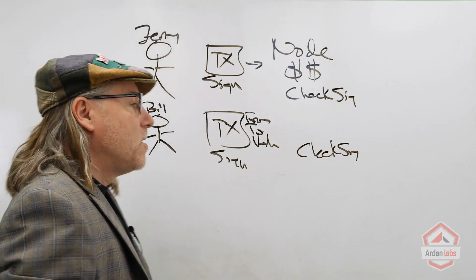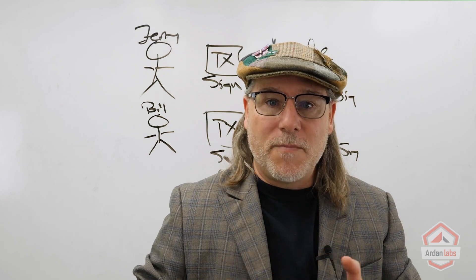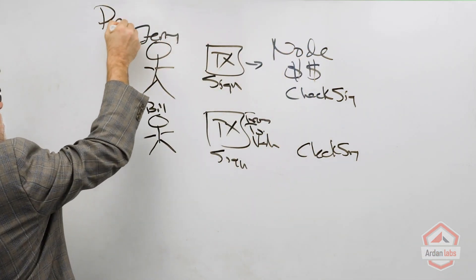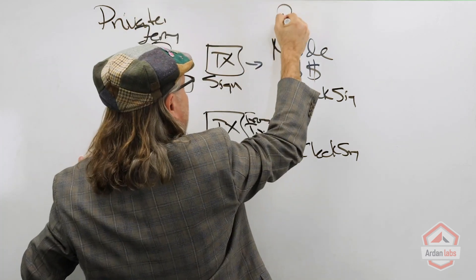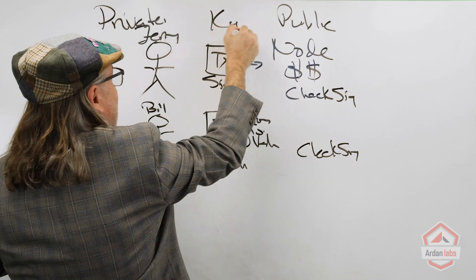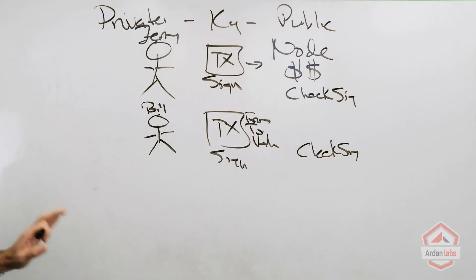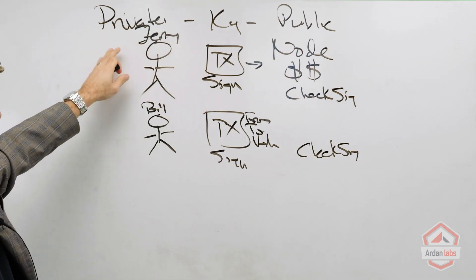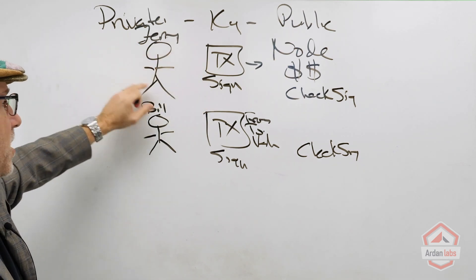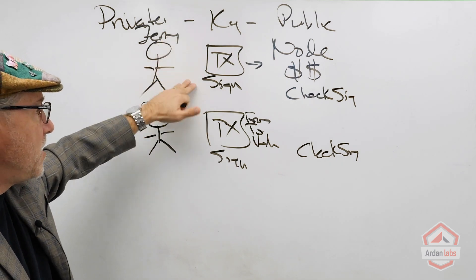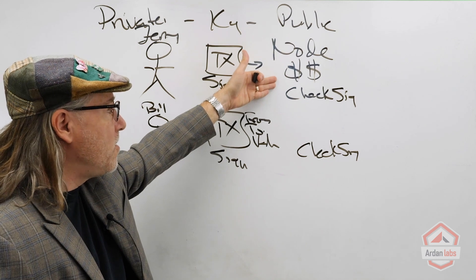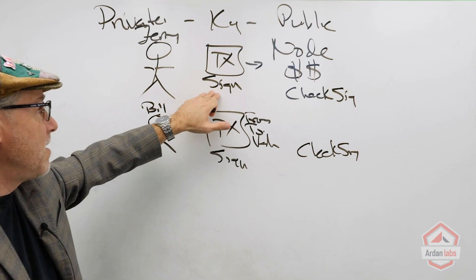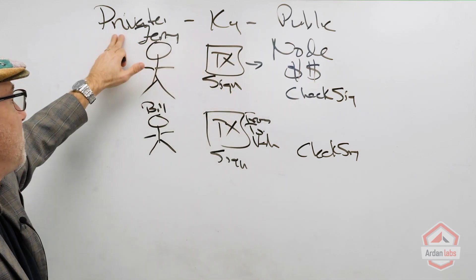In order to do this, what we're going to be using at a high level is a private/public key environment. The idea here is based on this transactional data, Jerry should sign that data with his private key, generate a unique signature based on the data and the private key, and then on the node side should be able to take Jerry's public key and validate that that signature had to come from the private key pair of the public key.